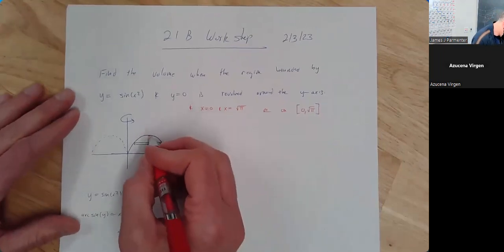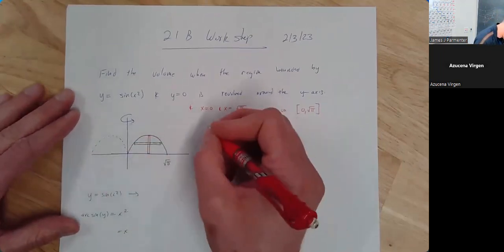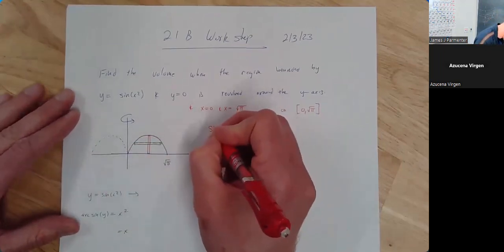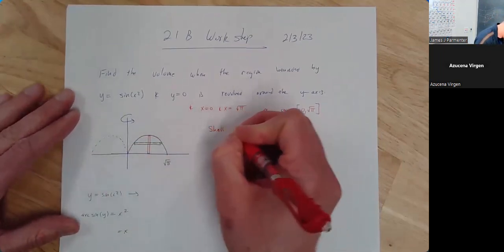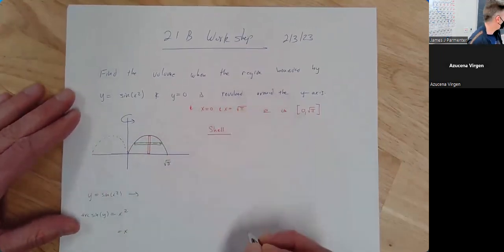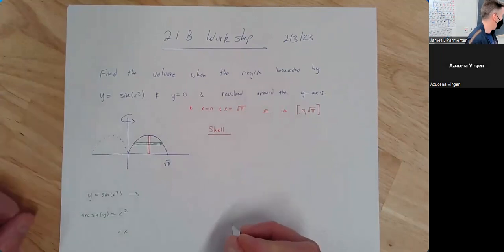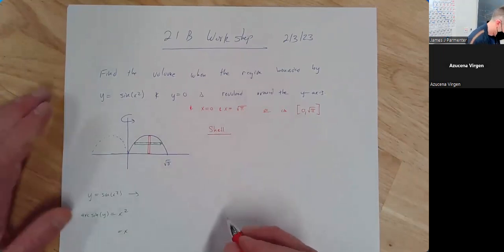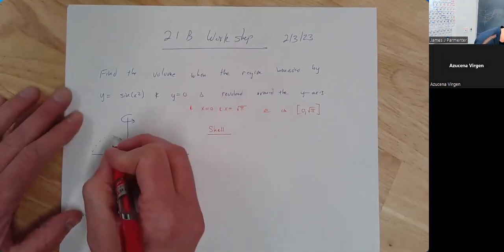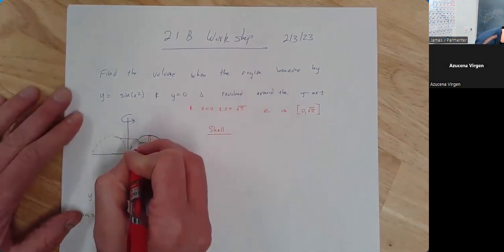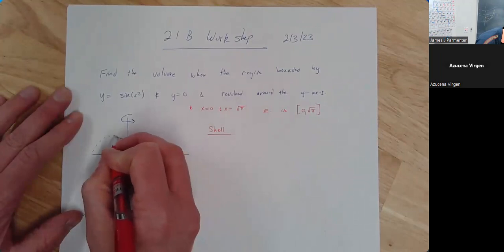So doing it this way means we're going to use the shell method, because the strip we chose was parallel to our axis of rotation. So now we're going to drop — we don't have to drop the little shell, but we can.